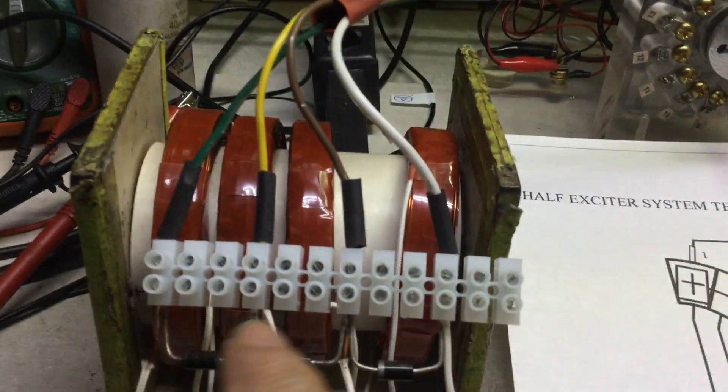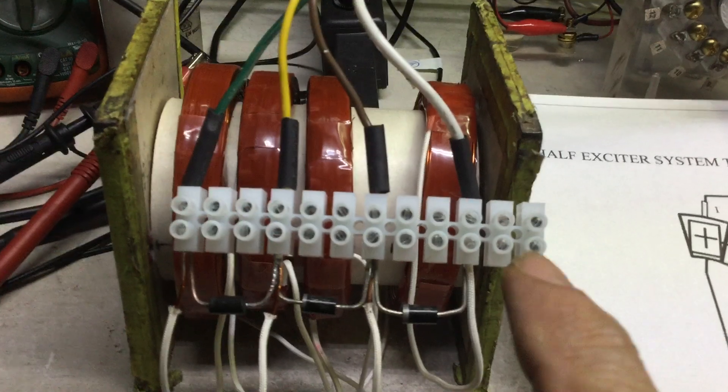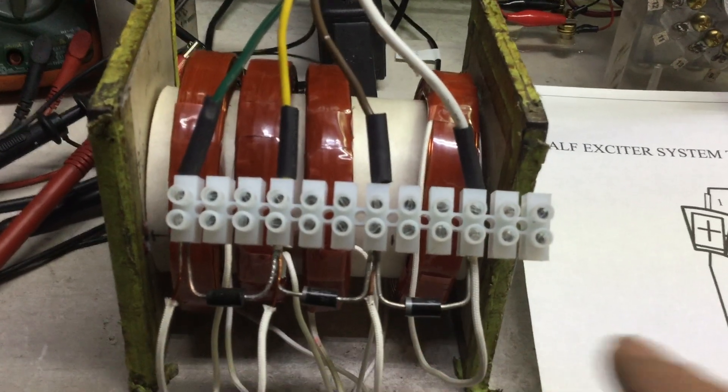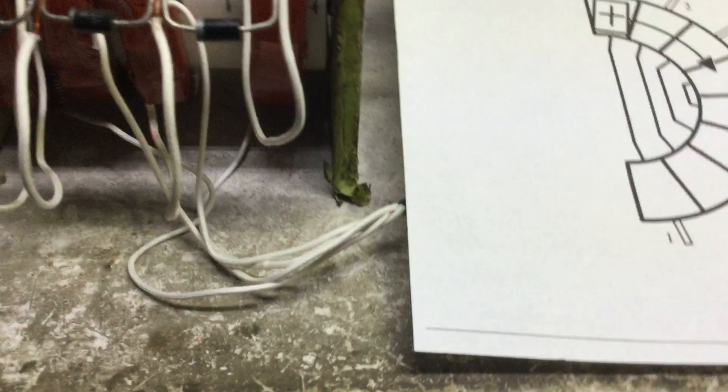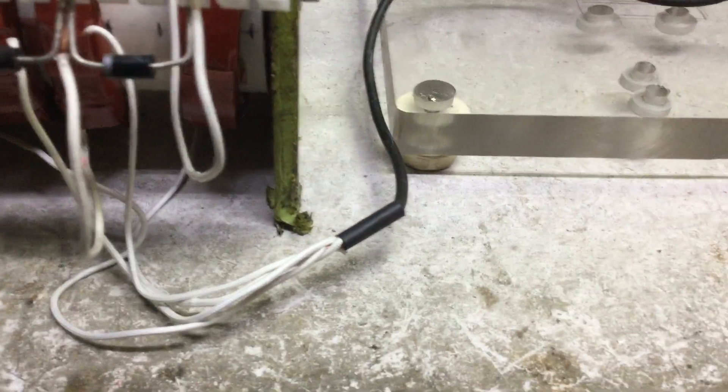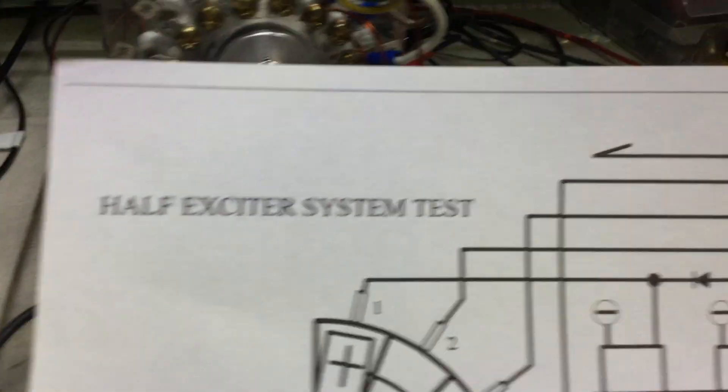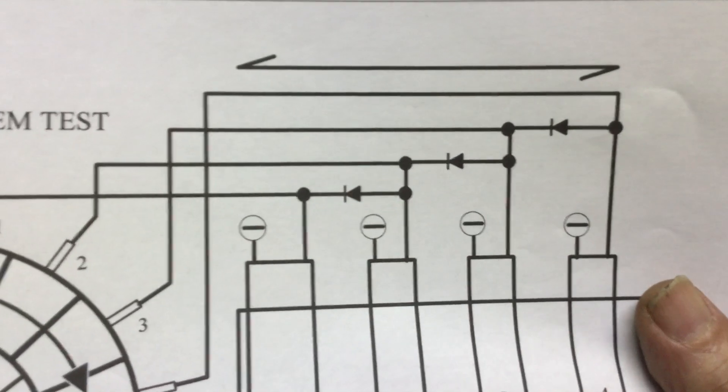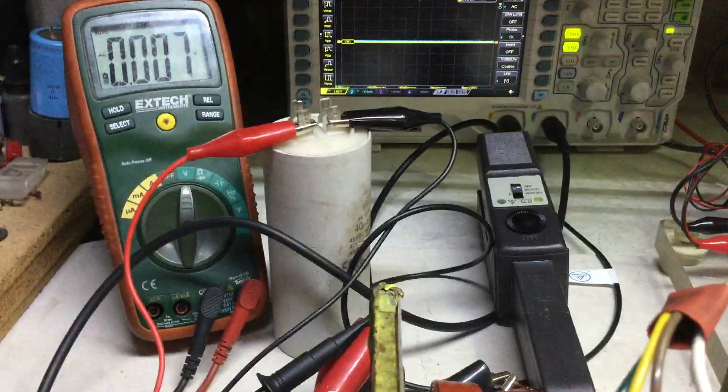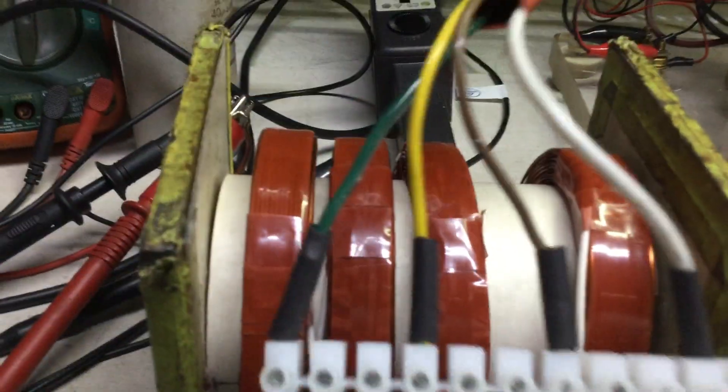All coils are grounded to the negative, and you can see right there. That's it. This is half of the generator working.